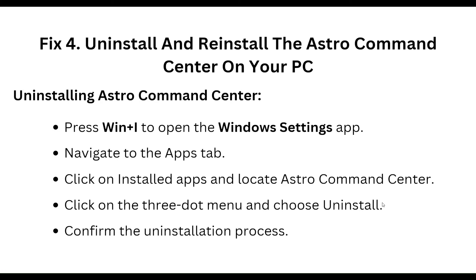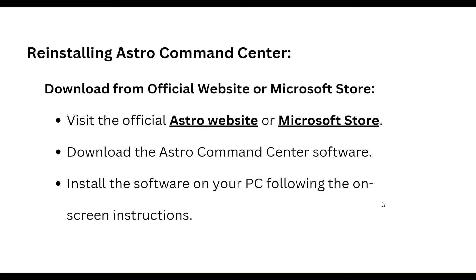The fourth step is to uninstall and reinstall the Astro Command Center. To uninstall, press Windows + I to open Windows Settings, navigate to the Apps tab, click on 'Installed Apps', and locate Astro Command Center. Click on the three-dot menu, choose 'Uninstall', and confirm the uninstallation process.